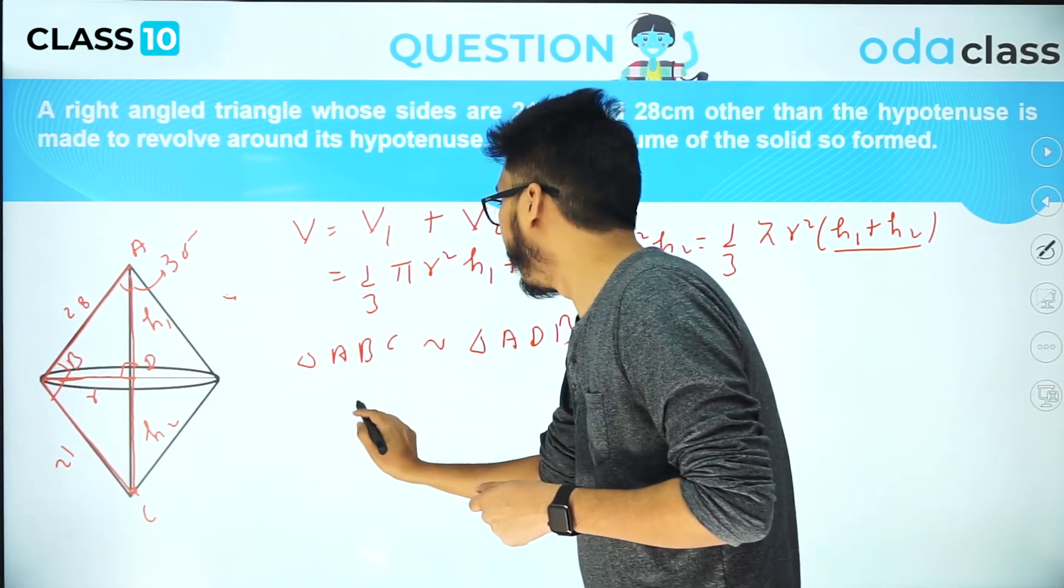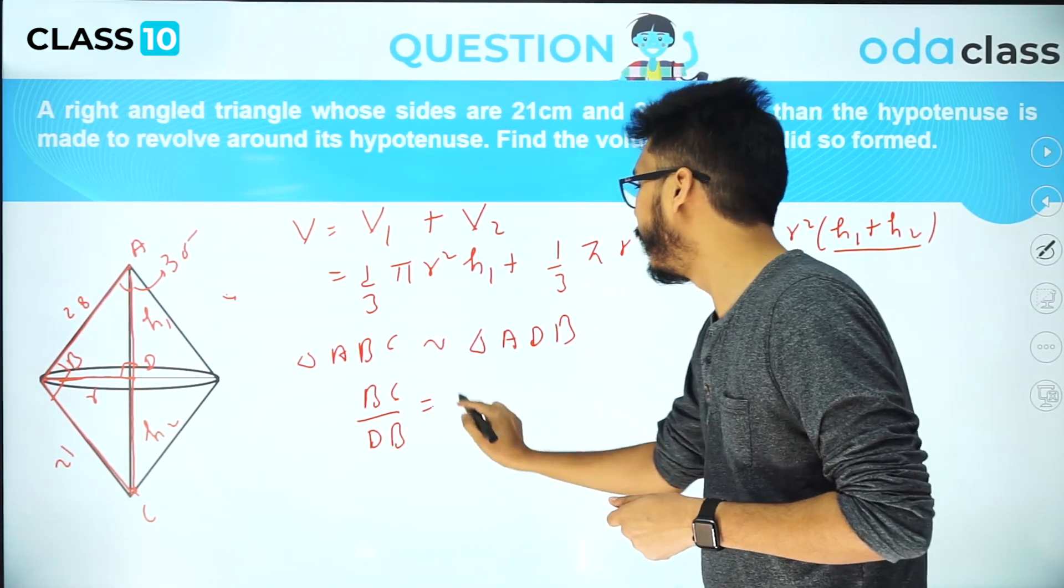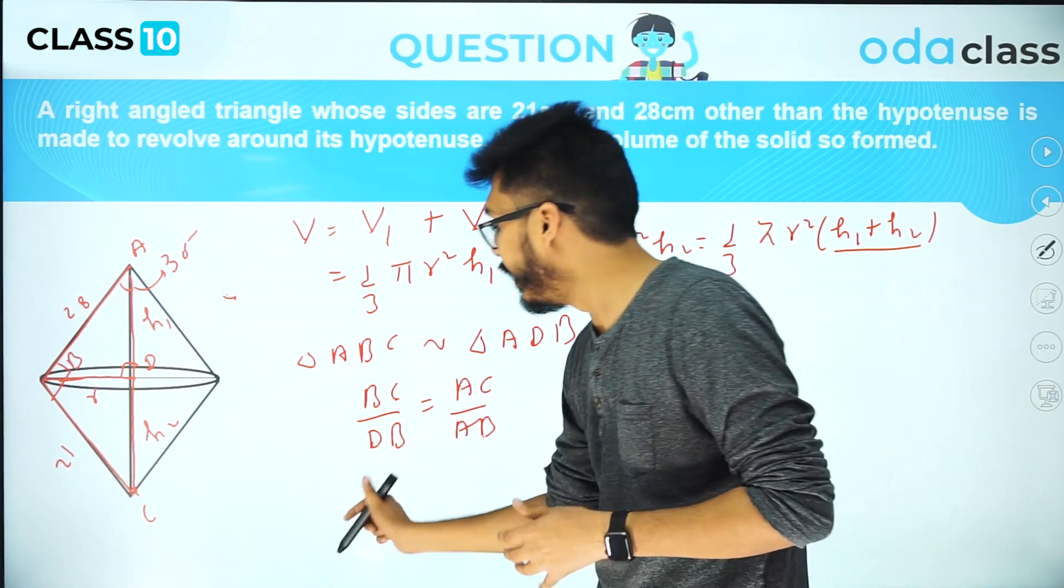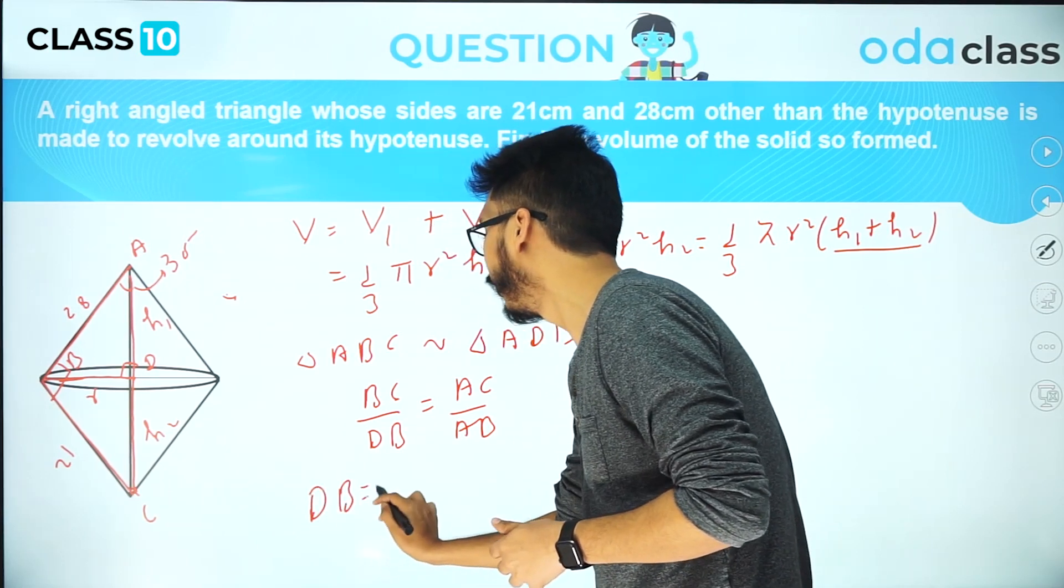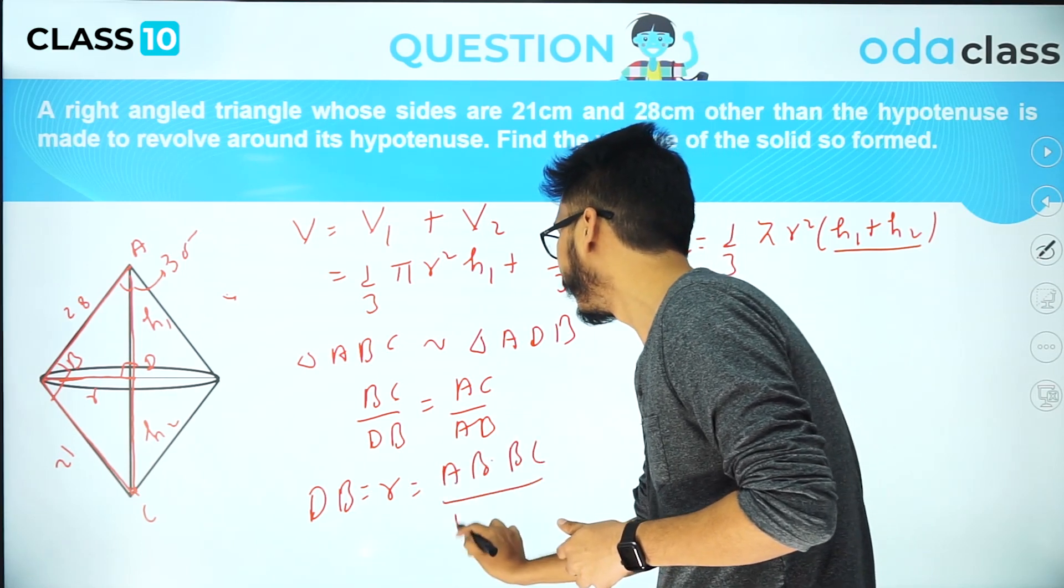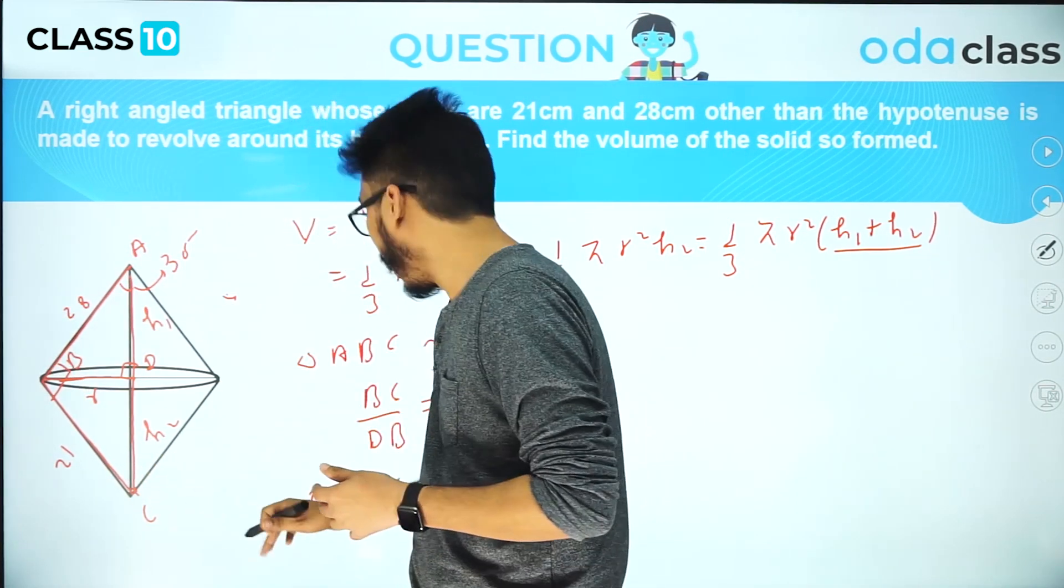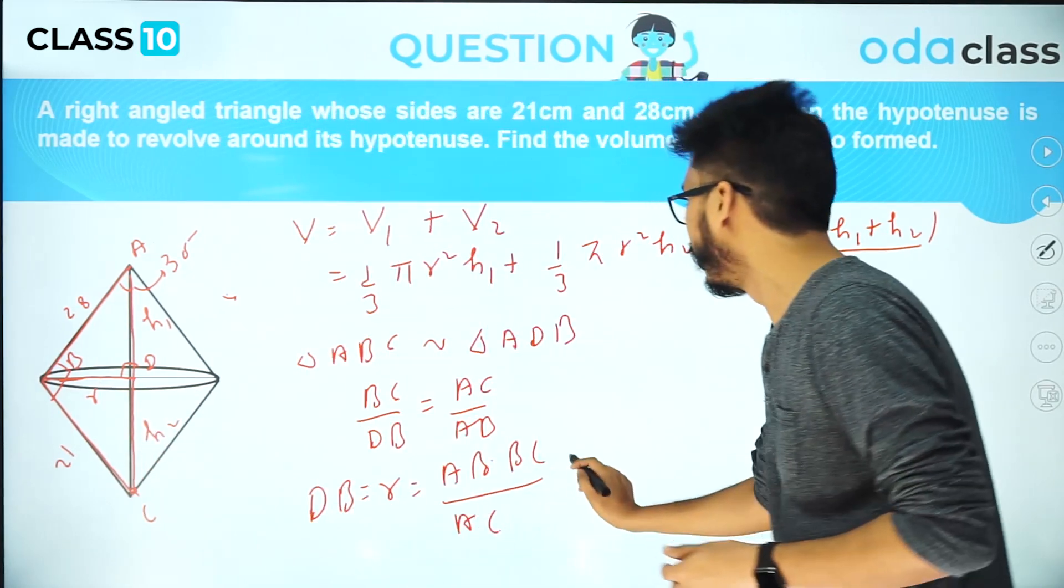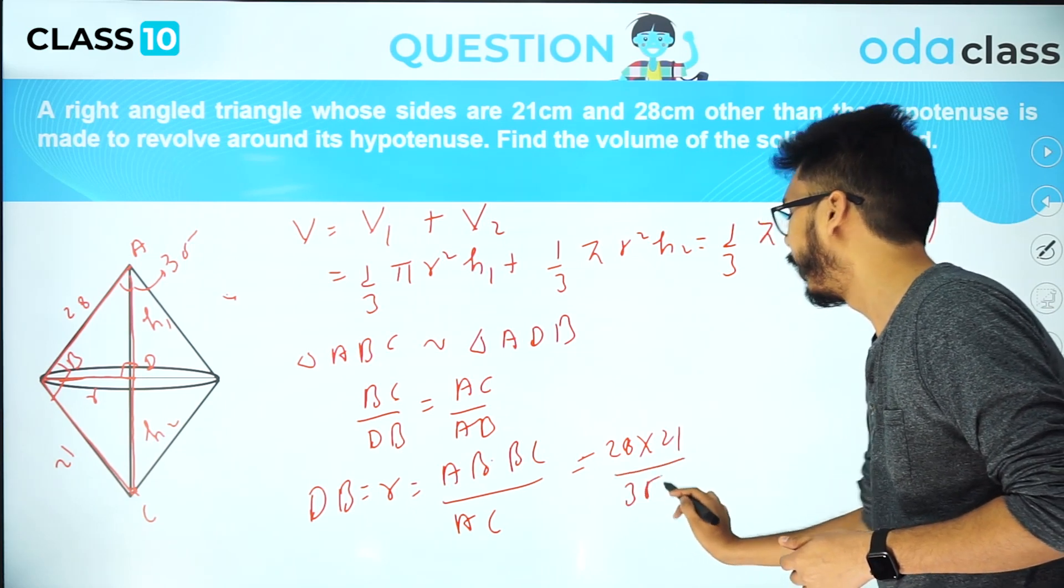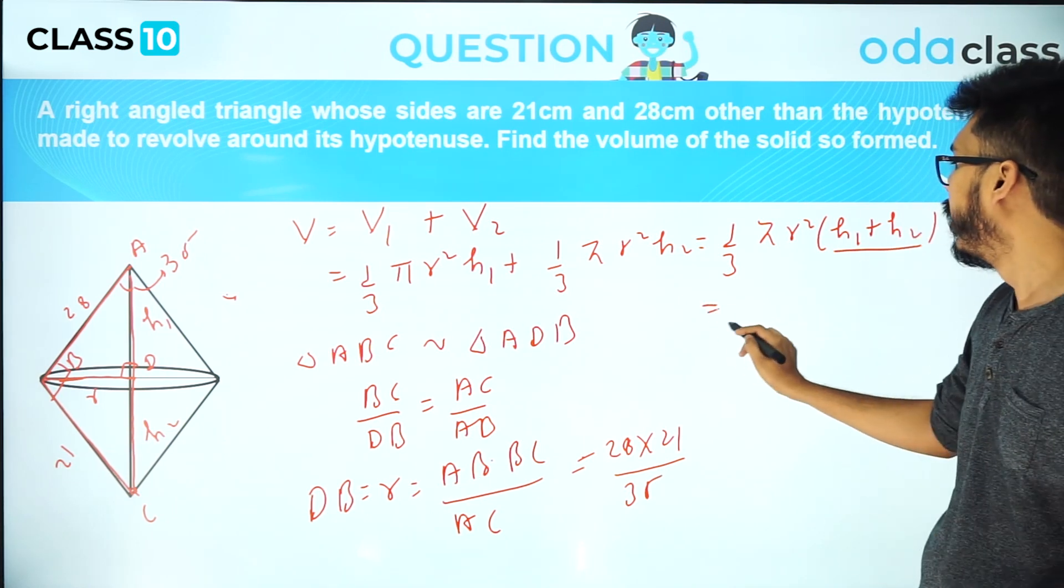Since I am looking for DB only, I can write BC/DB = AC/AB. From here I can write DB, which is nothing but R, as AB × BC divided by AC. AB value is 28, AC is 35, and BC is 21, so we get 28 × 21 divided by 35. Now we have the radius, we just have to plug it in and you will have your answer.